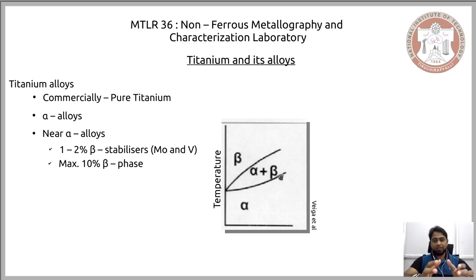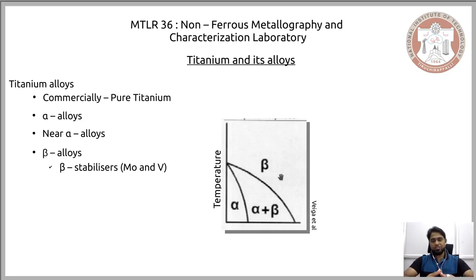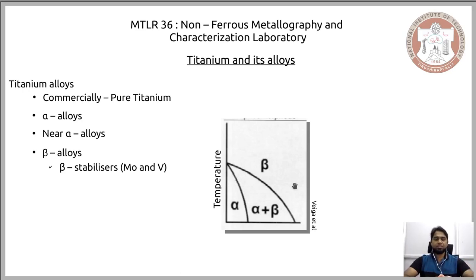In contrast to the alpha-dominant alloys, we have beta alloys. Beta alloys are made stable at room temperature by the corresponding beta stabilizer alloying elements — molybdenum and vanadium. As seen in the phase diagram, beta stabilizers reduce the transus temperature, thereby ensuring that the beta phase of the titanium alloy, which is not usually stable at room temperature, becomes stable through the inclusion of these alloying elements.